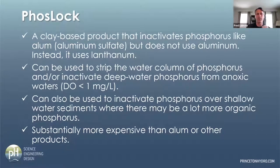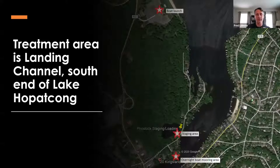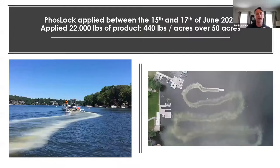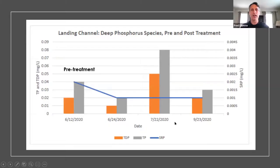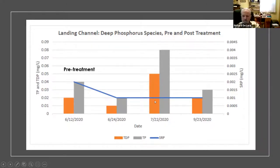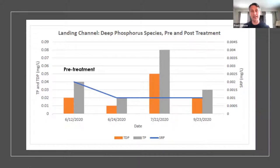Phoslock is essentially a compound that inactivates phosphorus either from the water column or from the sediments. We did a 50-acre treatment in the southern end of Lake Opakon and Landing Channel, applying 22,000 pounds of the product. We established water quality goals based on chlorophyll and total phosphorus based on the lake's TMDL, as well as goals for water clarity. We did see that bottom water concentrations of soluble reactive phosphorus — the candy to algae — remained low, and clarity remained at or above one meter after pre-treatment.